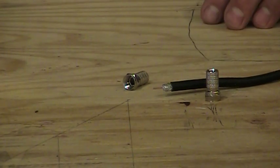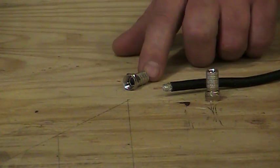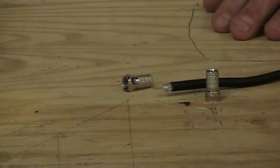However, in this case, I'm going to tell you something different, and that is we're going to leave the braid in place. We're not going to fold it back like we do on most F connectors. And the reason for that is the threads inside the barrel here will basically cut it off no matter what.